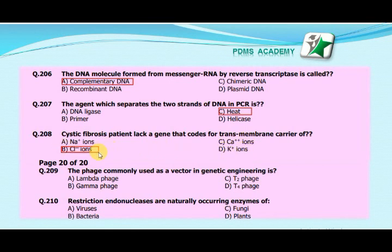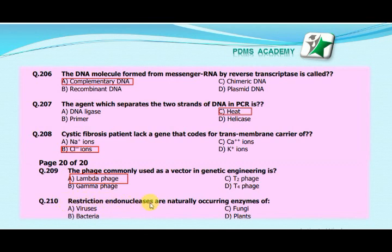The phage commonly used as a vector in genetic engineering is — A. Lambda phage, B. Gamma phage, C. T2 phage, D. T4 phage. The correct answer is A. Lambda phage.